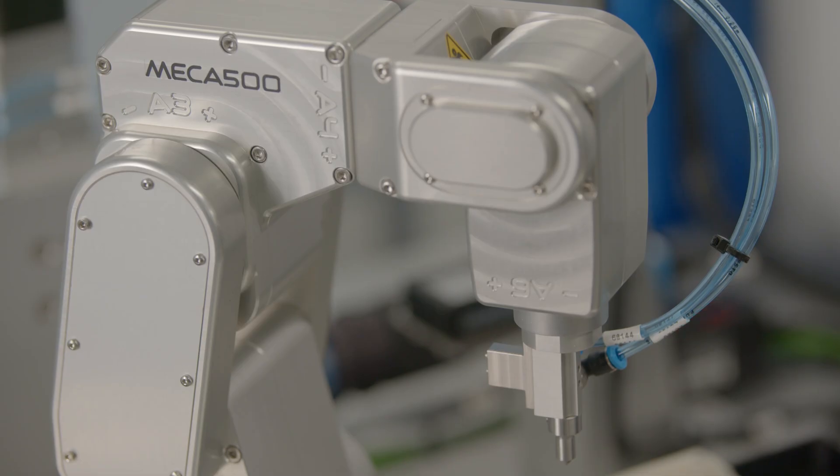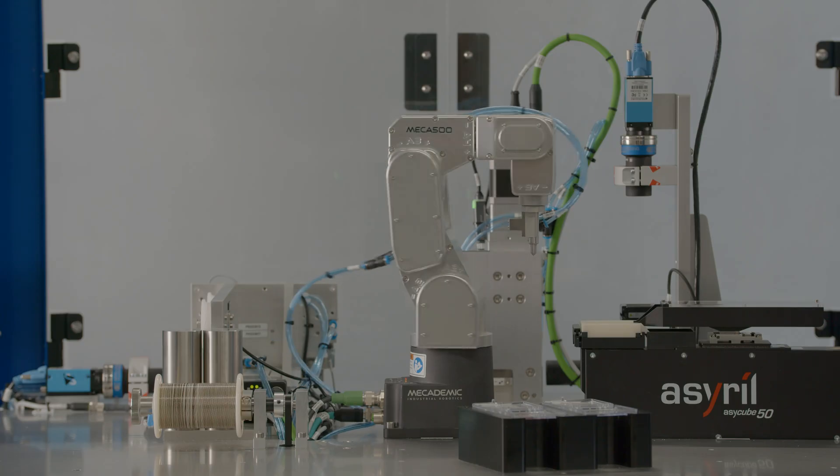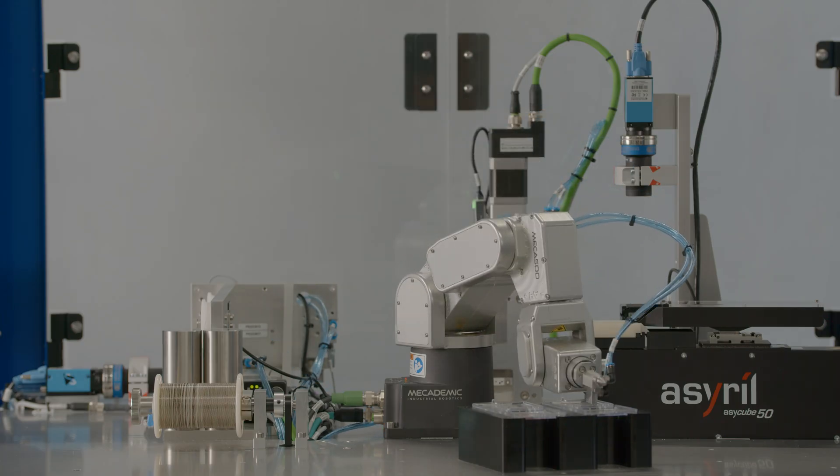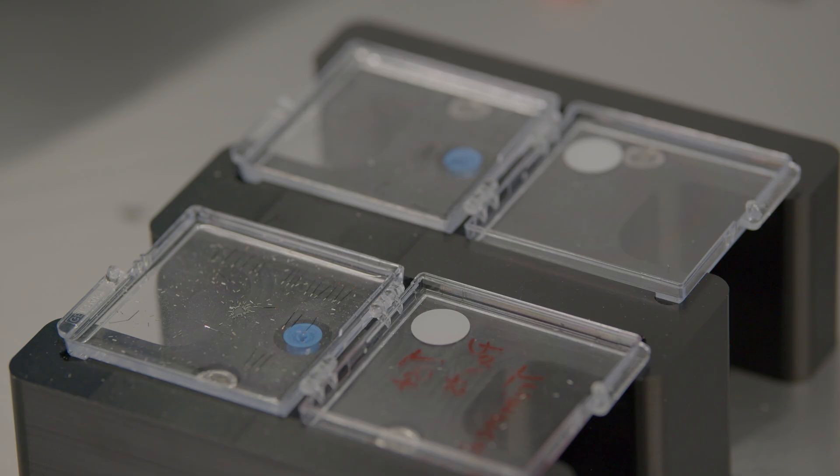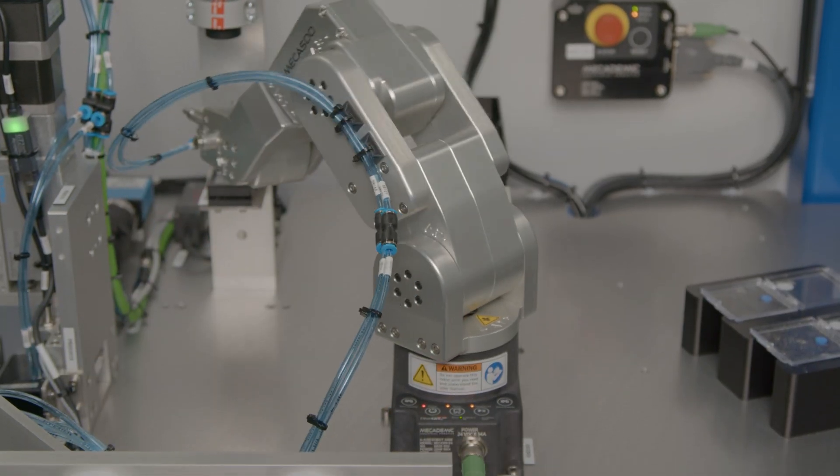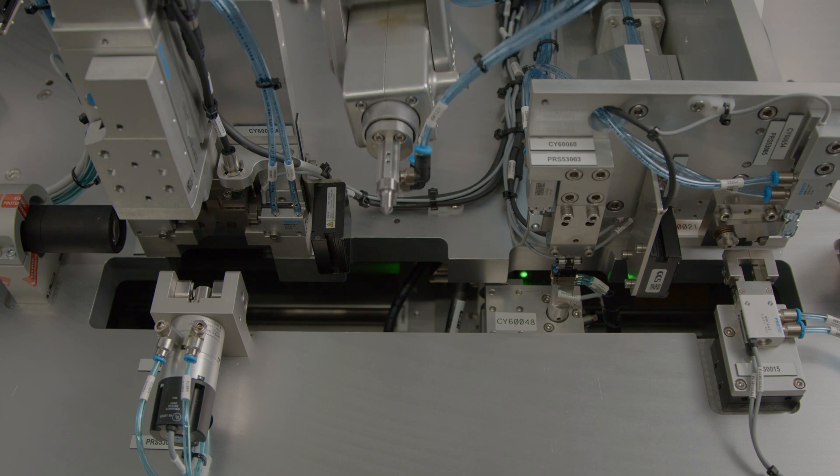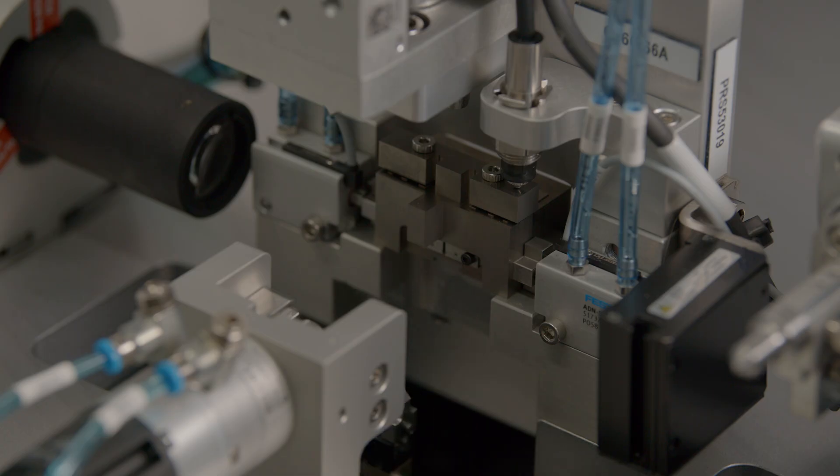We use the Mechademic Mecha 500 six-axis robot because we knew we needed high precision and a small footprint. The third component is a custom automation solution that feeds and cuts the wire.